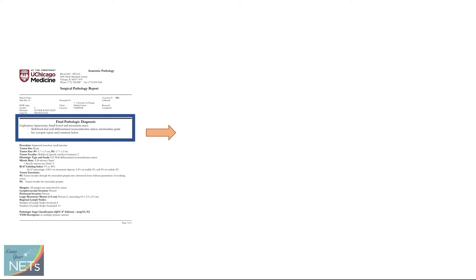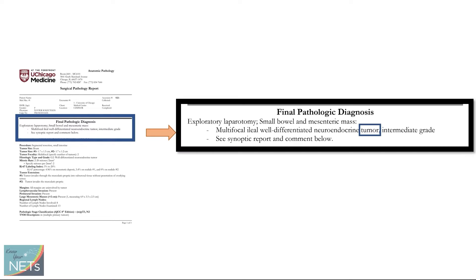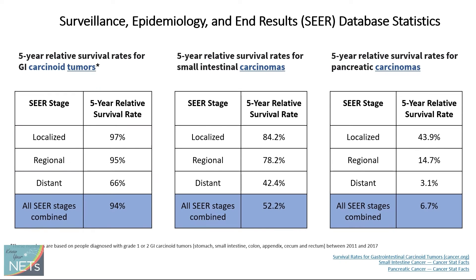Underneath that is a final diagnosis — this is the bottom line, the most essential information. That one or two sentences will have a summary of the most important information to be drawn from the report. For these kinds of specimens, you would often see the report listed as well-differentiated neuroendocrine tumor. The good news here is that it's a tumor and not carcinoma. Tumors are different from carcinomas, and even cancers come in different levels of aggressiveness.